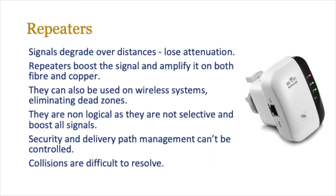You've probably had this issue at your home — dead zones, especially with your Wi-Fi, where there are areas where you can't get signal. Signals are basically waves and they use basic physical properties. They have to travel through a medium, which could be air or an electrical cable. Over time this signal degrades and you lose signal strength — something called attenuation. Repeaters are devices that boost the signal and amplify it on both fiber and copper, and they can also be used on wireless systems, eliminating dead zones.